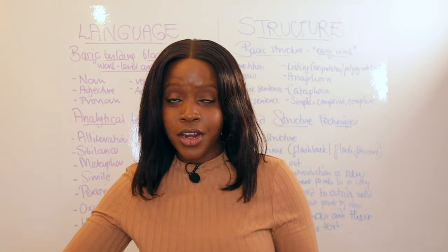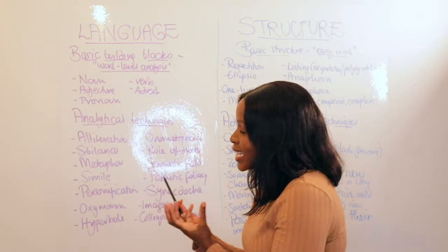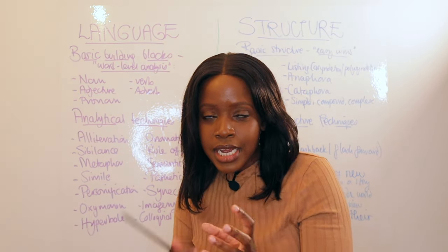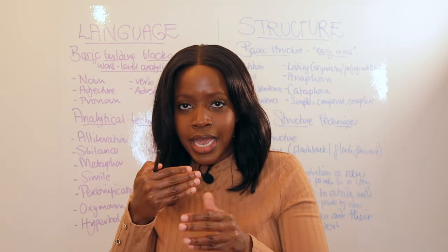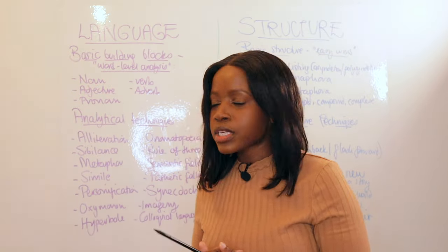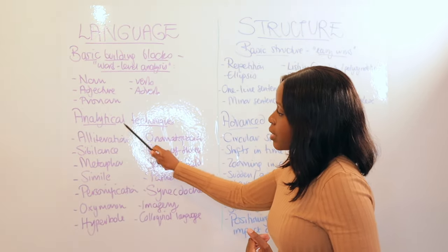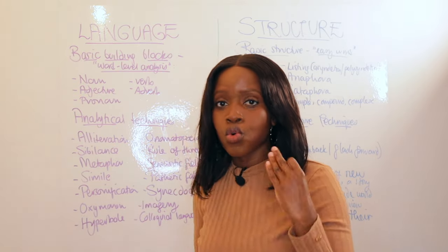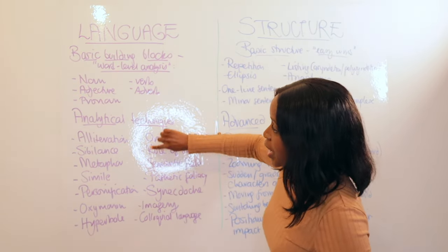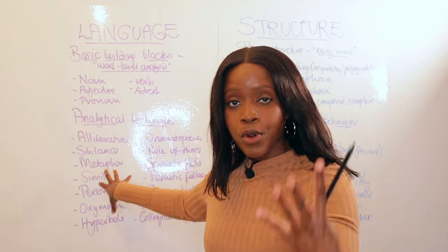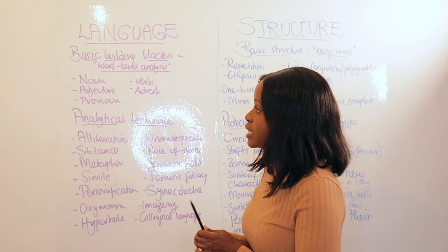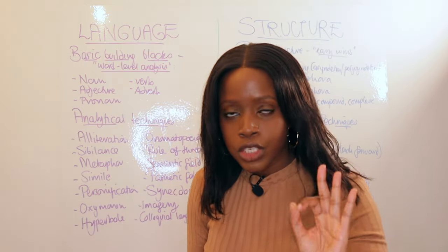When you're engaging in analysis — thinking about how a technique impacts us as readers and what the writer wants us to feel — you use the analytical techniques. You combine both approaches: you point out the analytical technique, then zoom in and do word-level analysis with the basics.